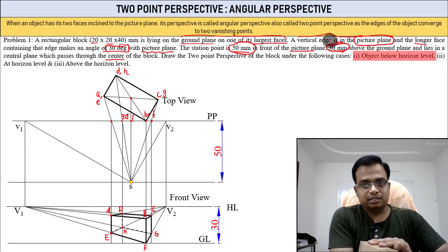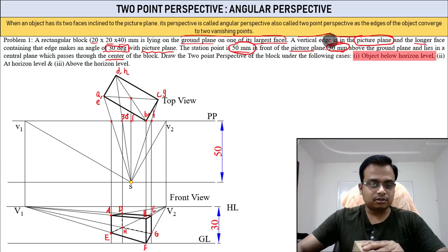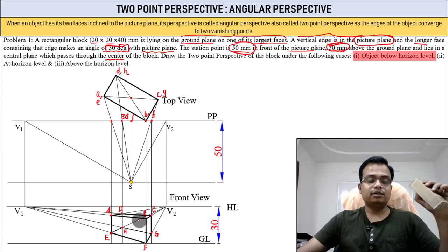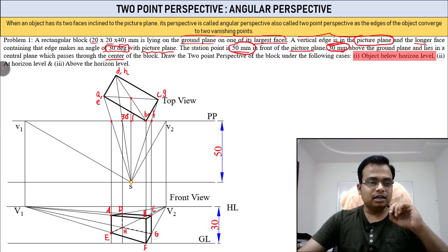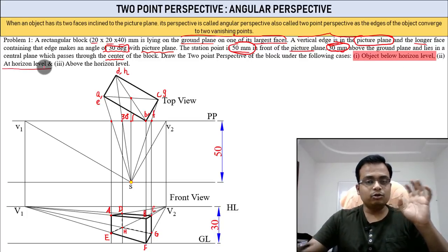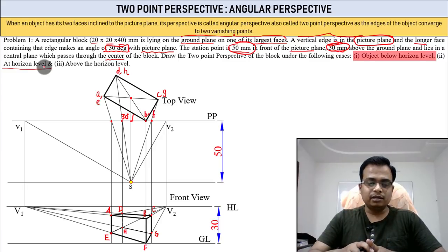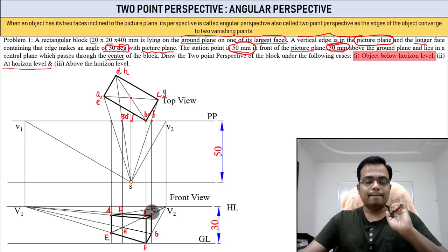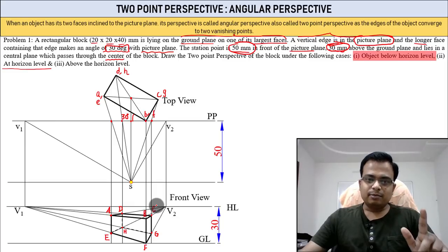You were watching from a horizon at 30 millimeters, and the object's maximum height is 20 millimeters — so the top face was visible. In the second case, when the object is at the horizon level, all the vanishing points remain the same. Only the location of this edge changes slightly.